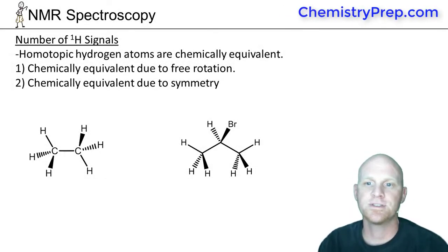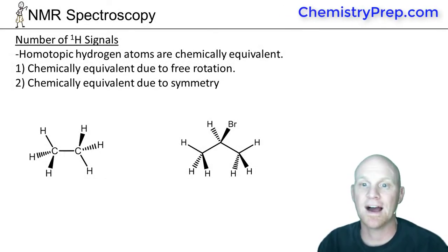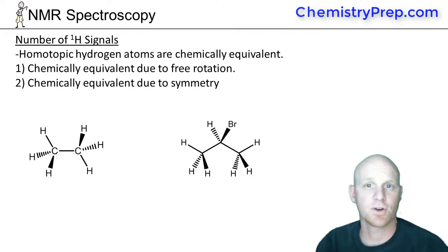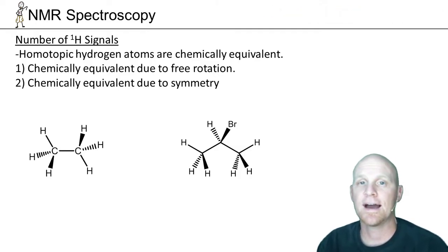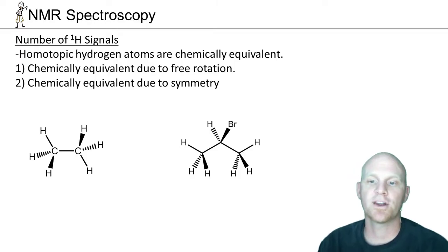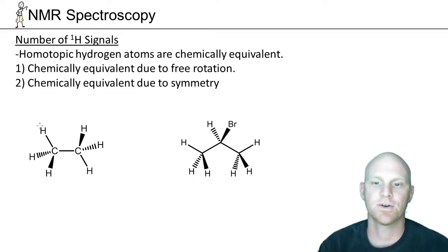Let's take a look at the number of hydrogen signals in a typical hydrogen NMR. When looking for the number of hydrogen signals, I highly recommend you draw every hydrogen in on your molecules, as I've done below here.